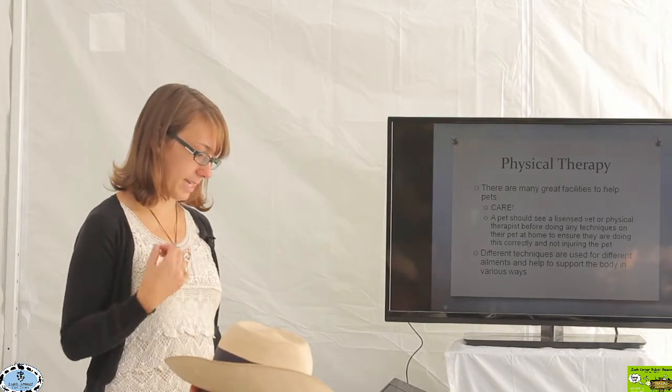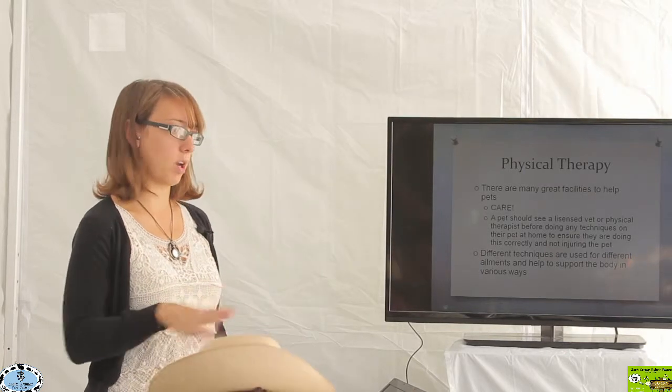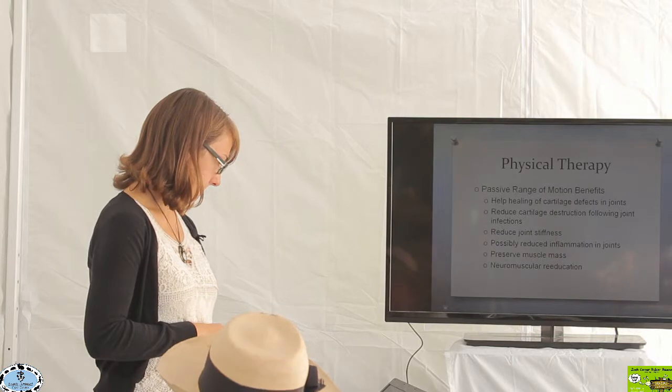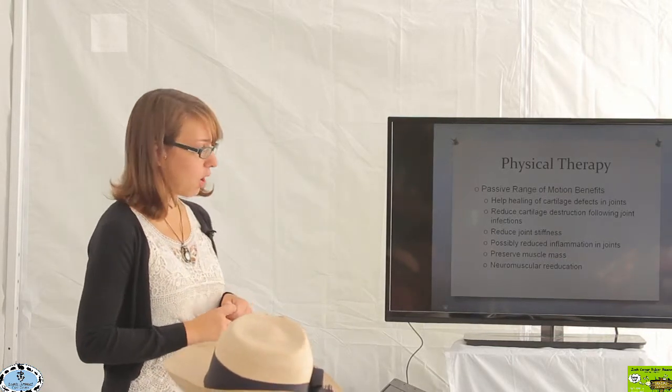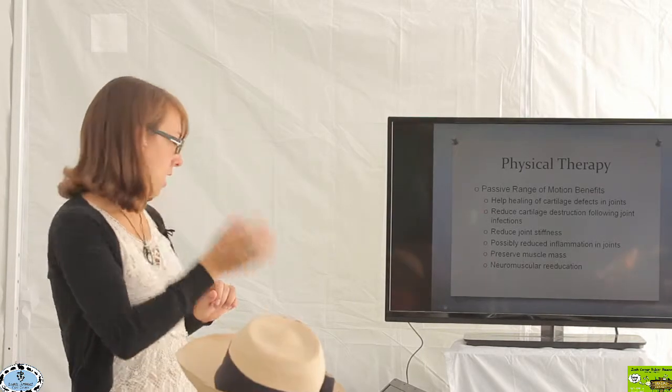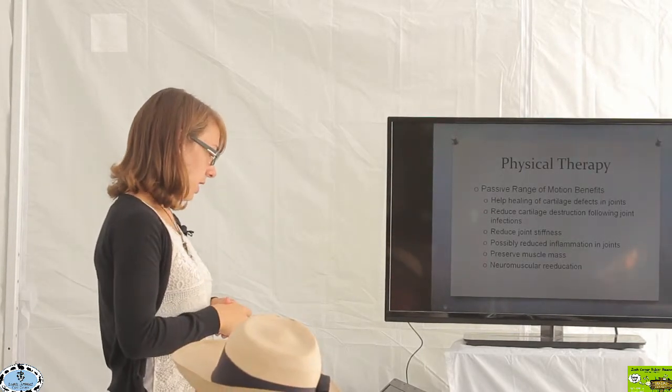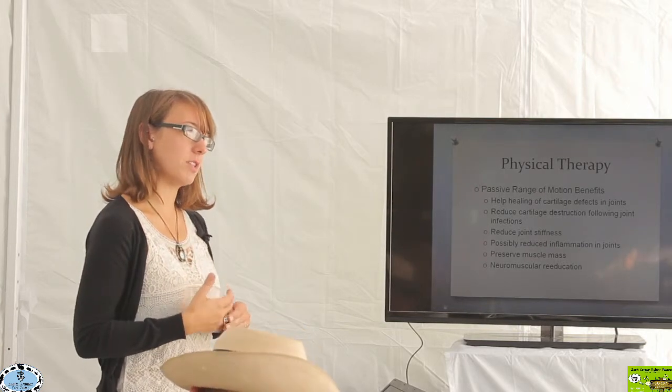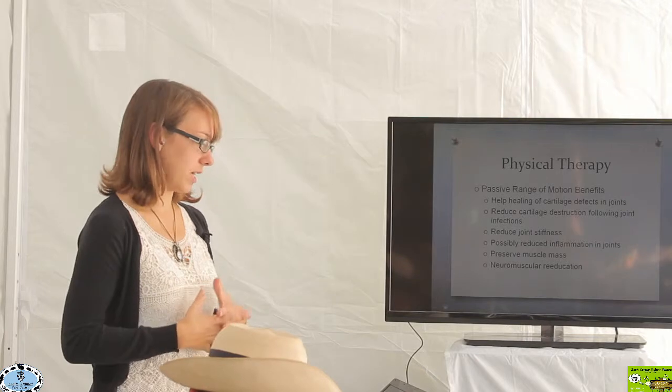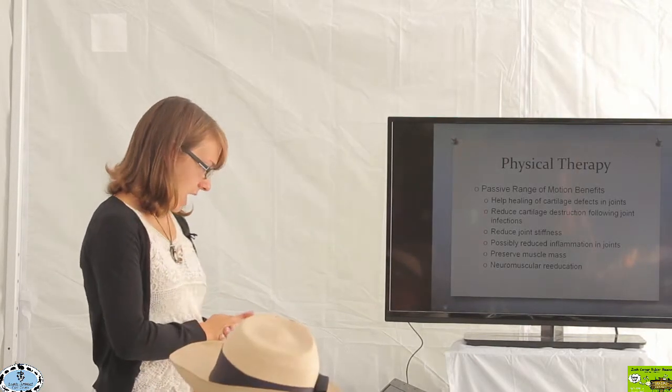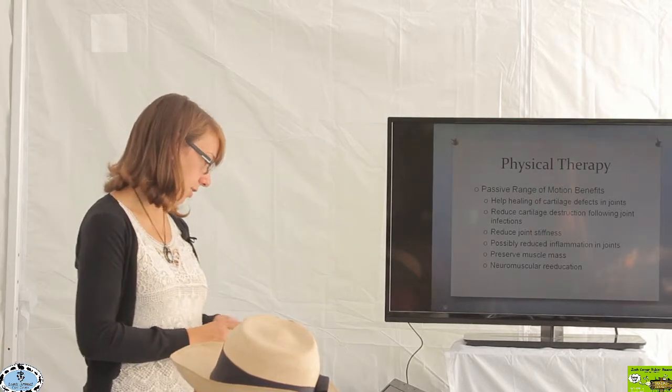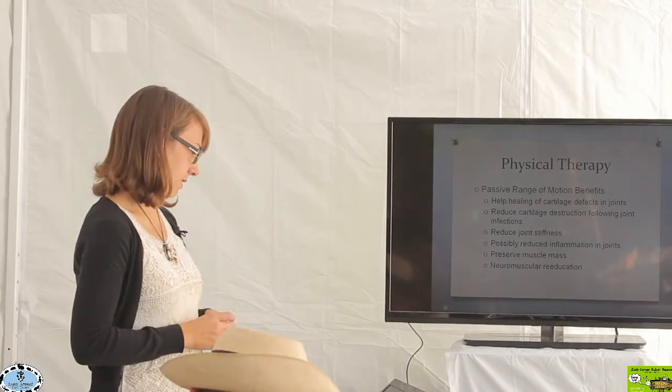There are different techniques that are used based upon what part of the body we're trying to work out. So we're going to go over a few of the different types of physical therapy that are available. Passive range of motion is a real common one and one that is often started initially when we're starting different physical therapy exercises. This is one of the first ones that a lot of people will go to. And passive range of motion has a lot of different benefits.